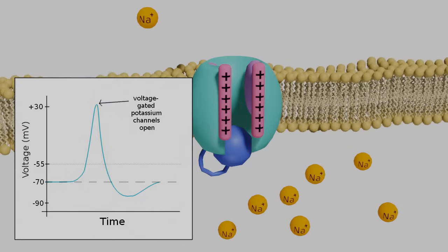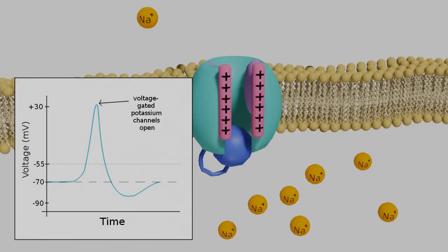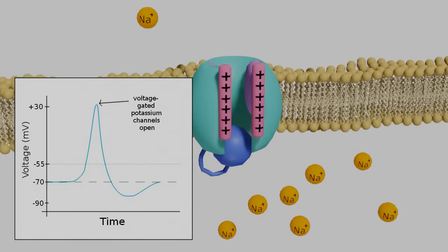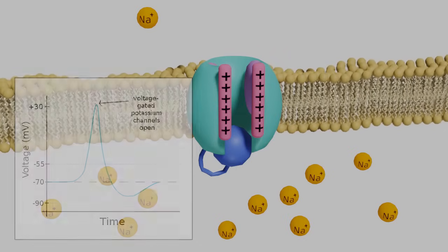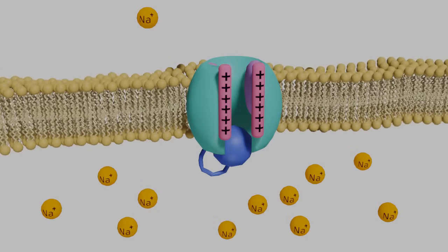At the peak of the action potential, the potassium channels will open. I haven't pictured them in this video, but the important thing to know is that this will lower the cell potential by releasing potassium ions out of the cell.